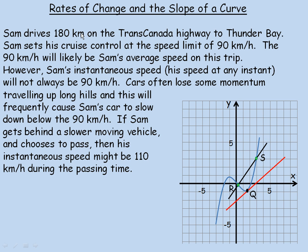In this lesson, we'll take a look at rates of change and the slope of a curve. In the example at the beginning of this page, Sam drives 180 km on the Trans-Canada Highway to Thunder Bay, Ontario. He sets his cruise control at the speed limit of 90 km per hour.